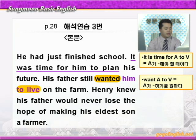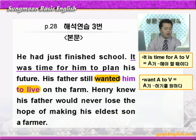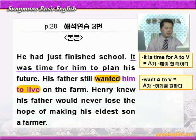His father, 그의 아버지가 would never lose the hope of making his eldest son a farmer. I would never lose the hope 희망을 결코 잃지 않을 것이라고, of 이하가 동격이죠. Making his eldest son, 그의 가장 손위의 아들이니까 장남이죠. 그의 장남을 a farmer, 농부로 만드는 희망을 결코 아버지가 잃어버리지 않을 거라는 것을 알았다는 의미가 되겠습니다. 아버지는 헬리가 농부가 되기를 원하지만 헬리는 다른 것을 생각하고 있습니다.